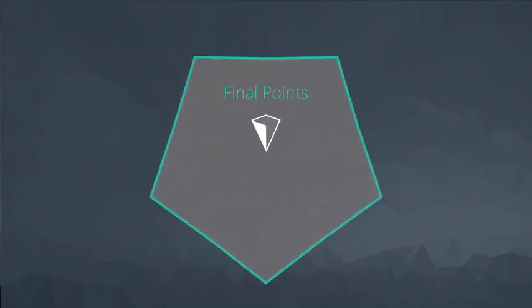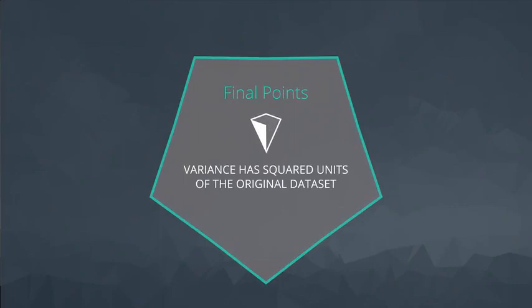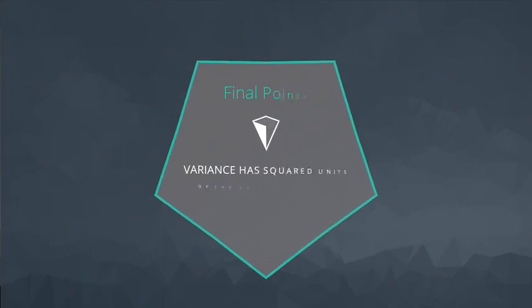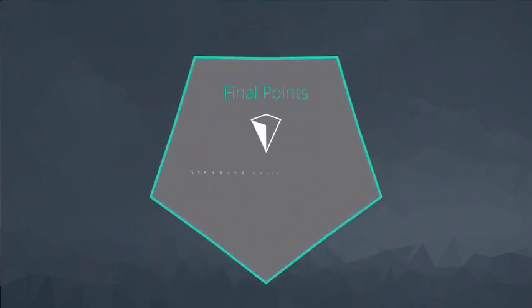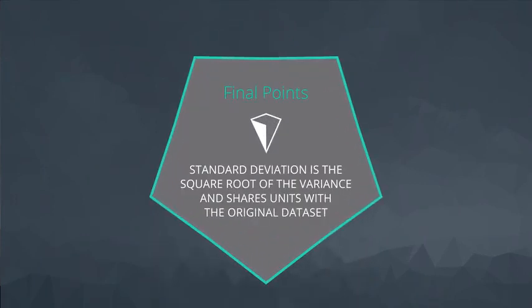Finally, the variance has squared units of your original measurements. For example, if you are measuring revenue in dollars, the variance has units of dollars squared, which isn't particularly useful. For this reason, the standard deviation, which is the square root of the variance, is often deemed a more useful measurement of spread, as it shares the units of the original data set. If you measure revenue in dollars, the standard deviation also has units of dollars.